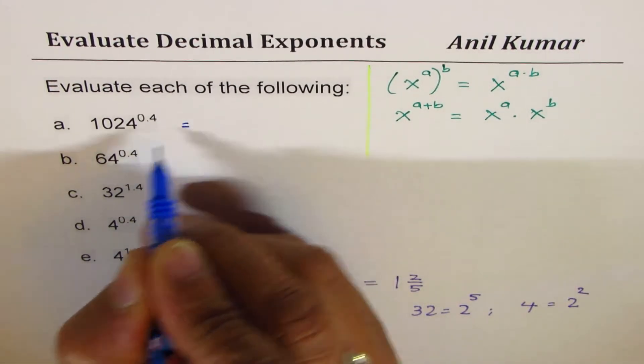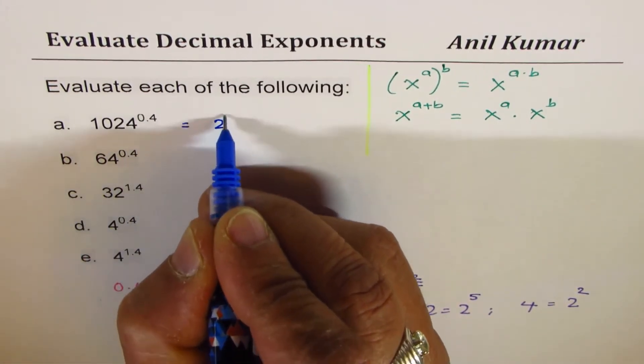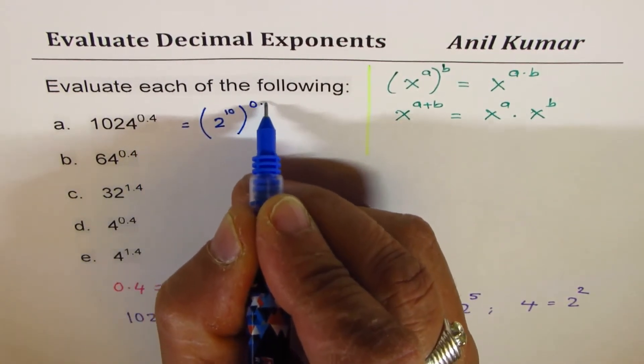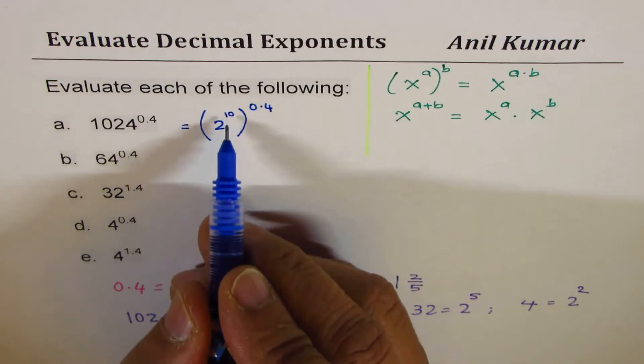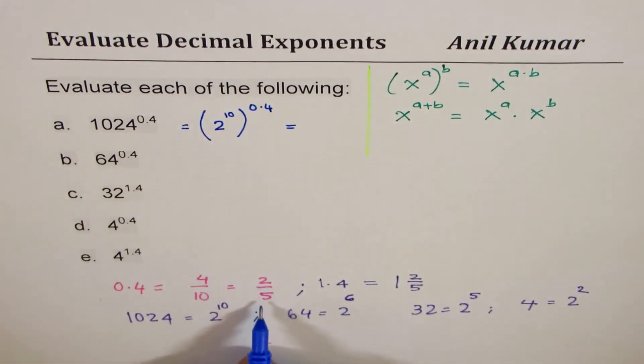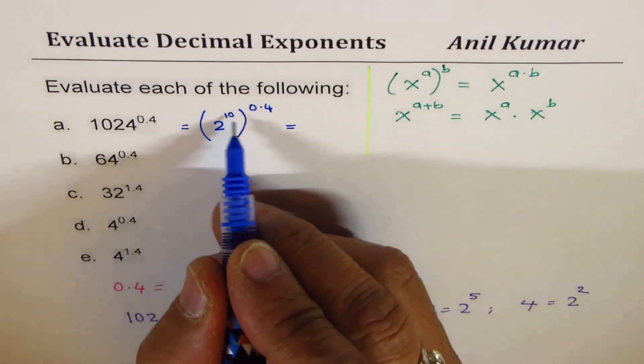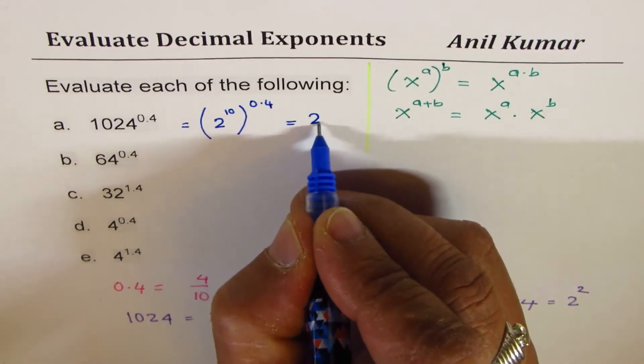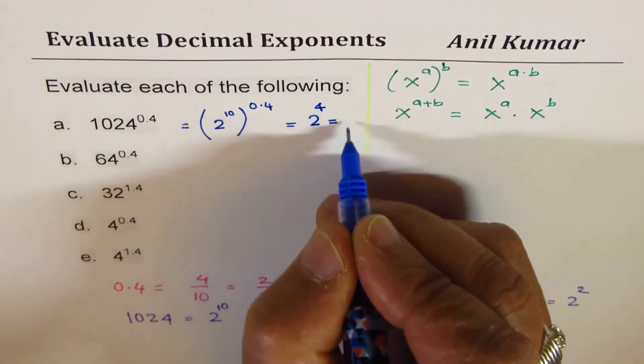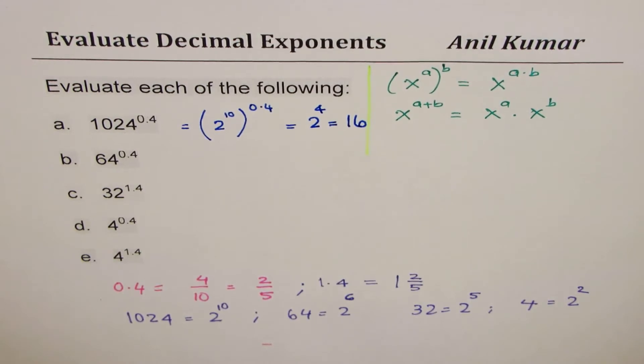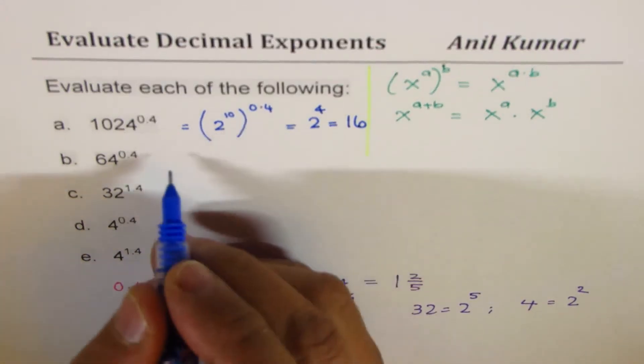First one, 1024 to the power of 0.4, could be written as 2 to the power of 10 to the power of 0.4, correct? As soon as I multiply this, you need not write 0.4 as a fraction. 10 times 0.4 gives you 4. So you get 2 to the power of 4 and 2 to the power of 4 is 16. You get your answer. You get the idea. It's kind of simple if you do like this.